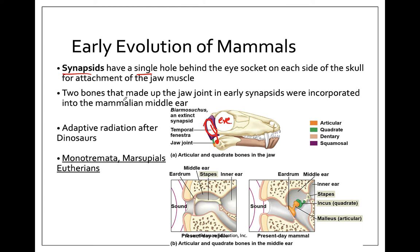There are a couple other structures in the skull that we start to see. Early amphibians and reptiles only had one inner ear bone, the stapes. Now in mammals, we see the articular and the quadrate bone, which used to be in the jaw joint, have moved into the ear. So in the middle ear we now see three bones: the malleus, the incus, and the stapes.